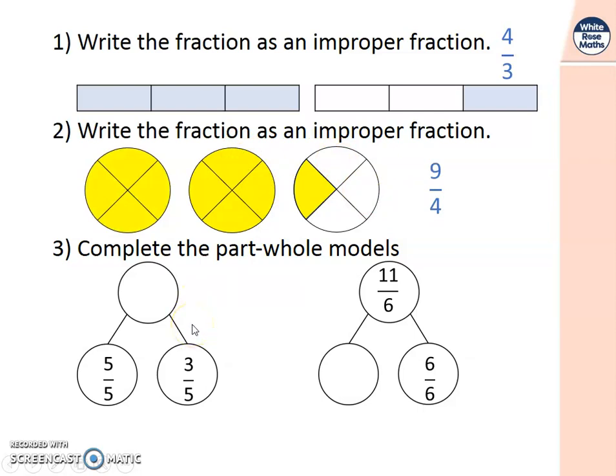Number 3, complete the part-whole models. So, one part is 5 fifths. Second one is 3 fifths. And together they make 8 fifths. Here I know the total. And I know one part is 6 sixths. What would I need to add to it to get to 11 sixths? You should have 5 sixths. Well done if you got those answers.